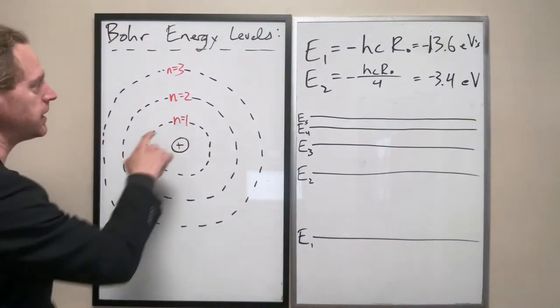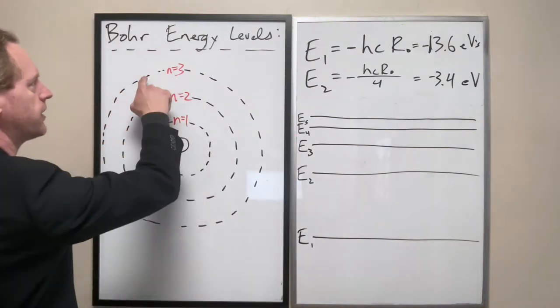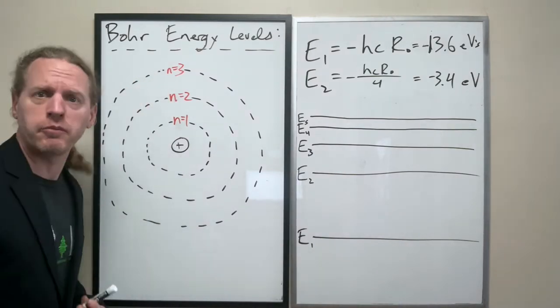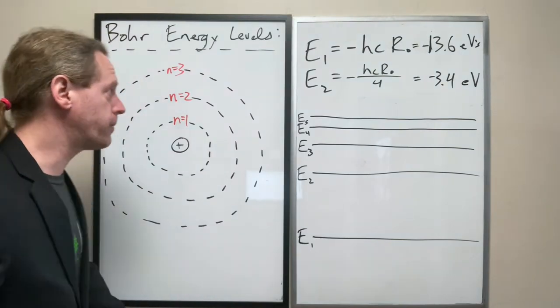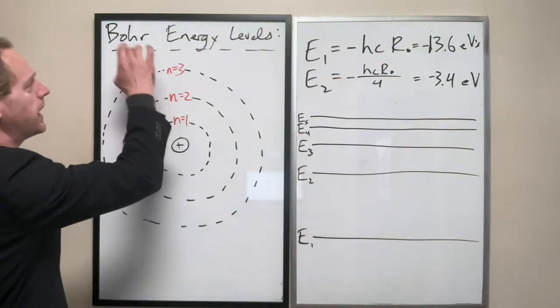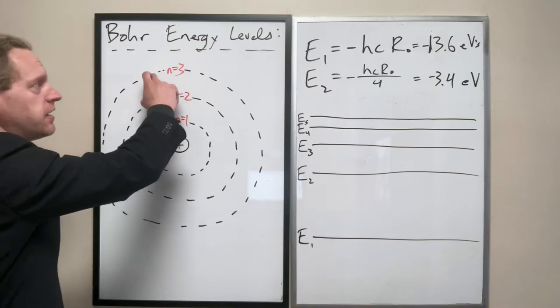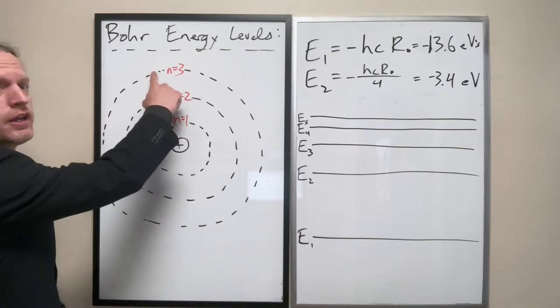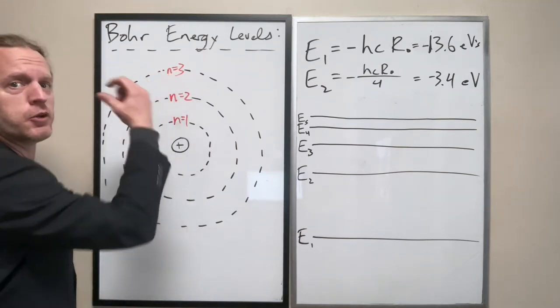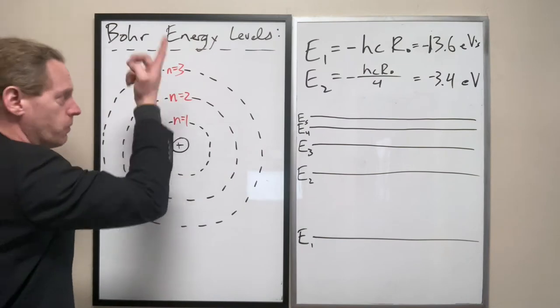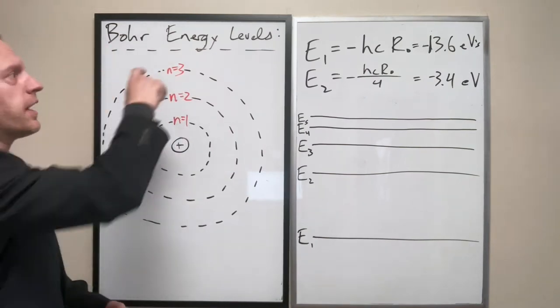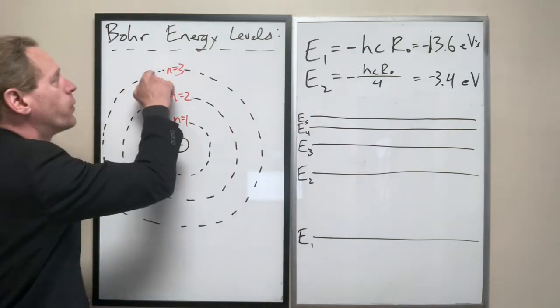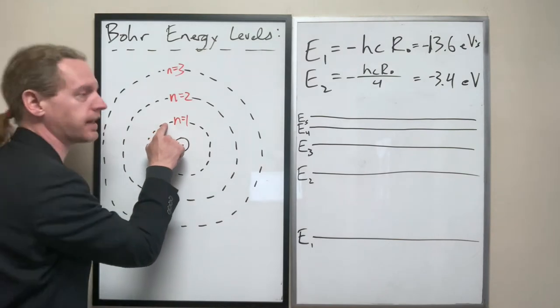And if the electron happens to be in one of these higher energy levels, let's say n equals 3, it will, after some amount of time, for some reason we don't fully understand, but we know it will happen eventually with a guaranteed probability, that electron eventually will just spontaneously lose some energy. And one of two things will happen. So if it's already at level 3, if it loses some random amount of energy, it will either disappear and then immediately reappear at level 2, or it will disappear and immediately reappear at level 1.